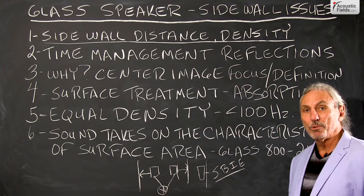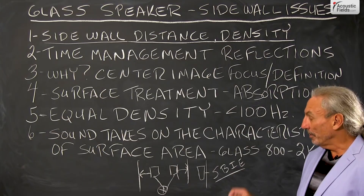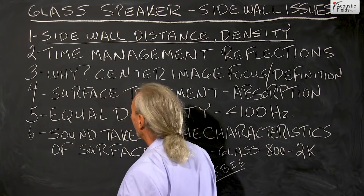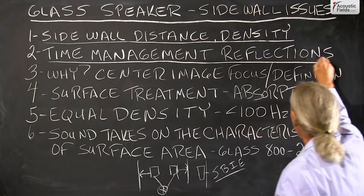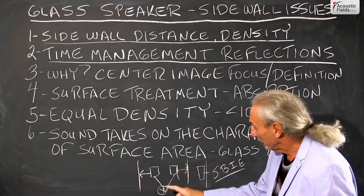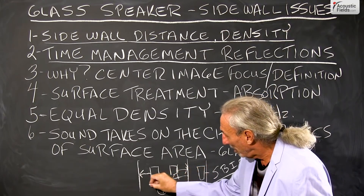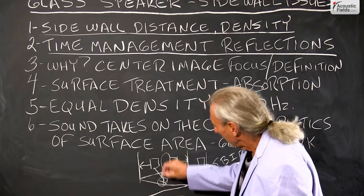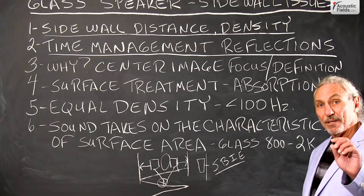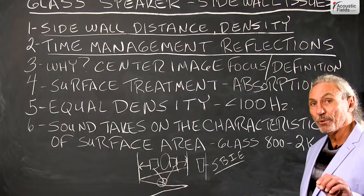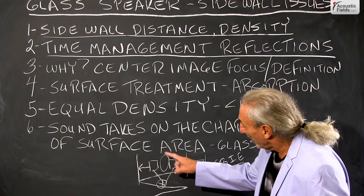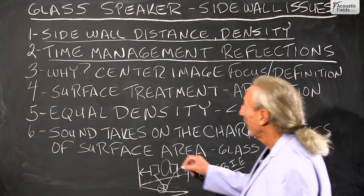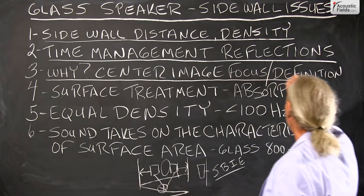The first rule in acoustics is do no harm — we don't want to do more damage than we're trying to alleviate. We want to time-manage the reflections off the sidewall surfaces at the listening position, because we have all of these reflections going back and forth. We have to manage those to get that strong center image that's defined and revealed so we have everything in the mix. We have to control both the distance and the reflections, and the reason for that is center image focus and definition.